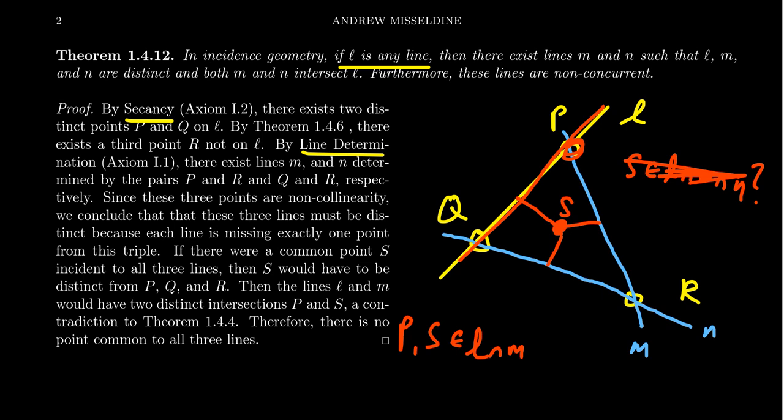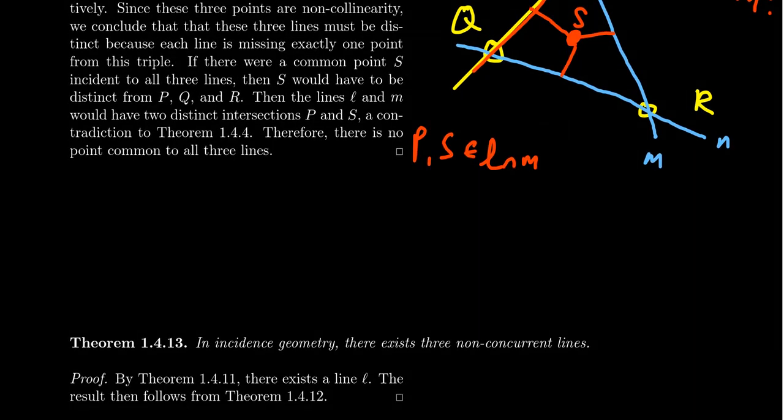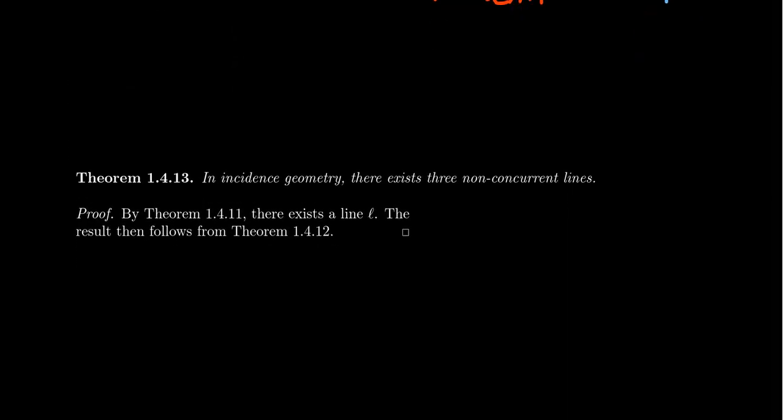And then, as a corollary of that theorem right there, there exist three non-concurrent lines. So the previous theorem says that if we have a line, I can construct two other lines which are not concurrent to it. So how do we get lines? Well, line existence says there is a line. So we have a line L, and then the previous theorem is applied, for which then we are done.